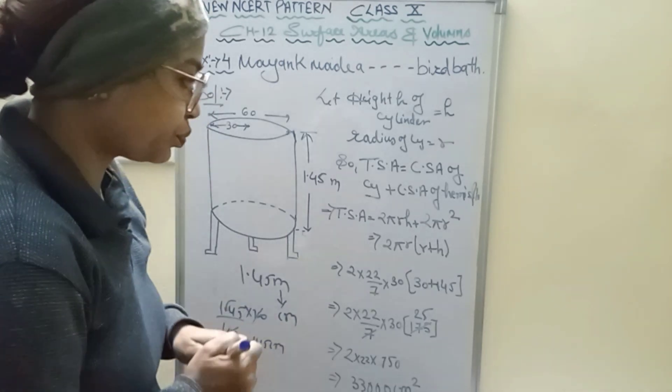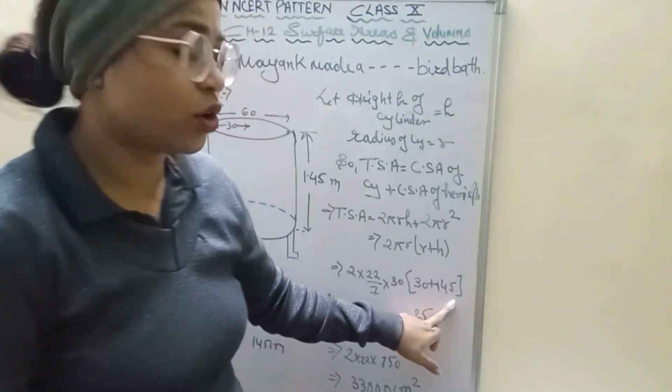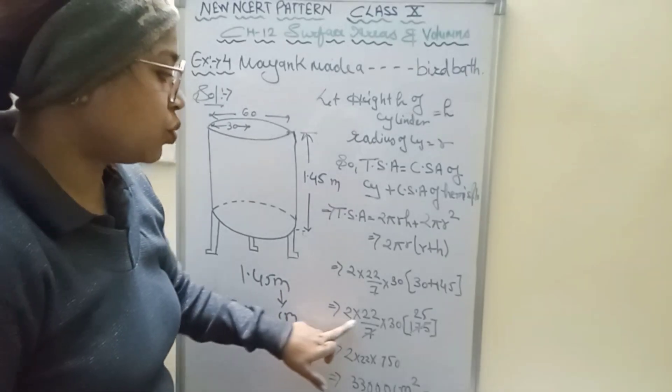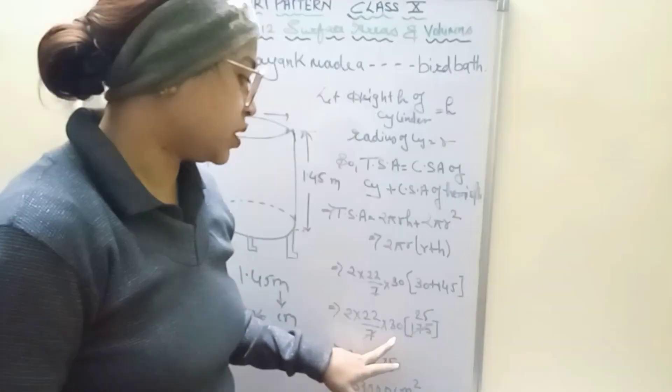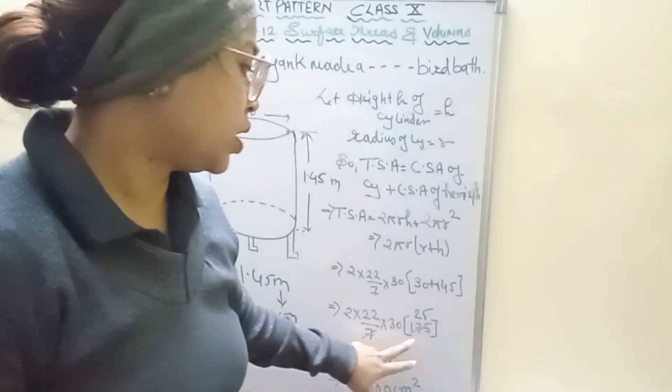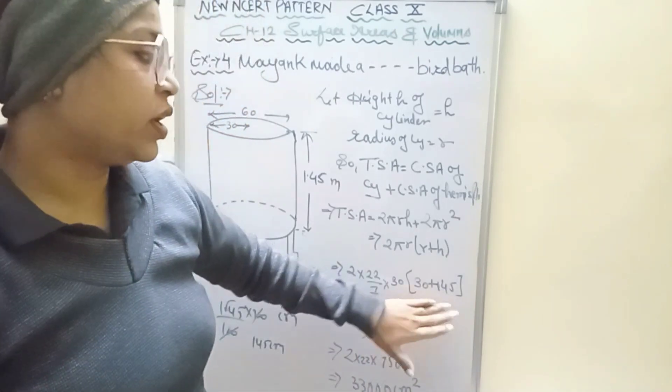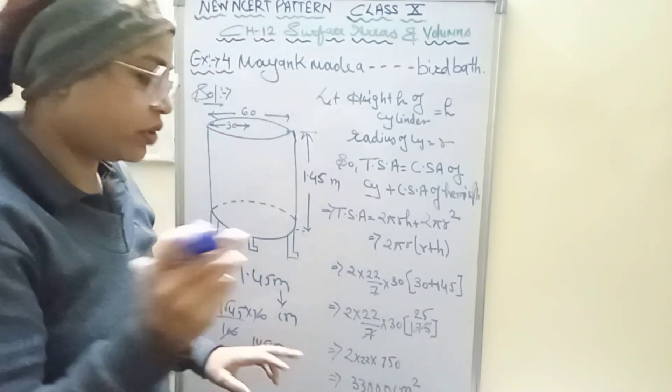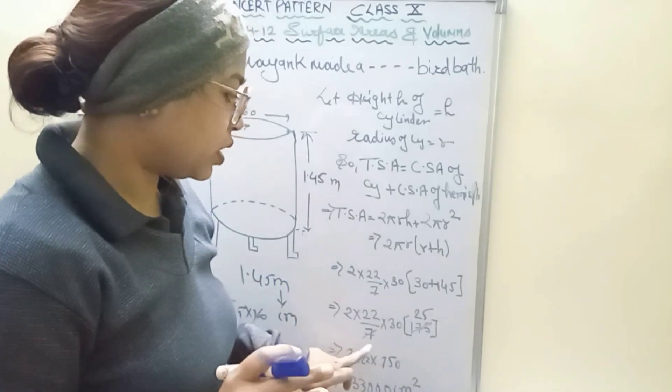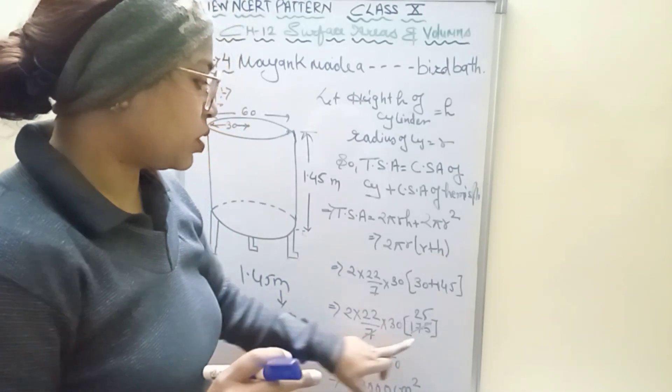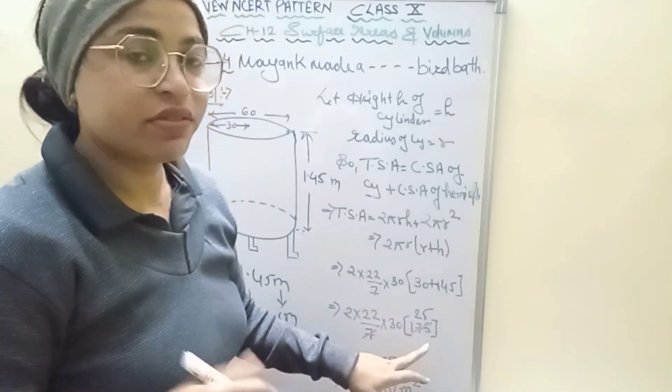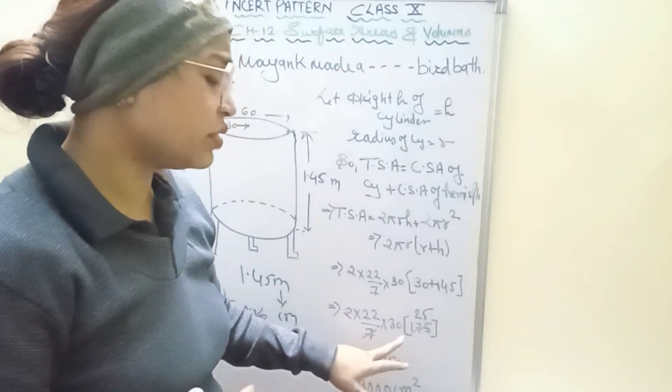So 2 and 22/7 as it is, and 30 in the bracket with 175. The value when we add 145 and 30 is 175. The calculation: 7 divides into 14, giving 2; 7 into 35 gives 5, so the remaining is 25 here.